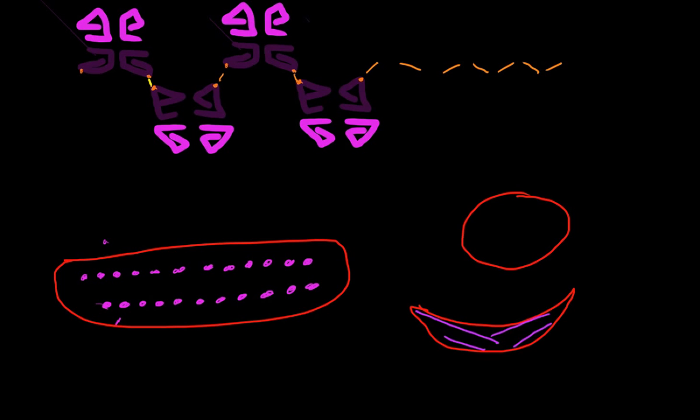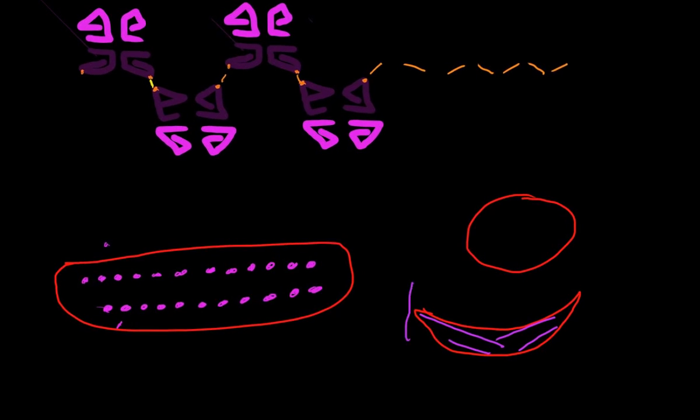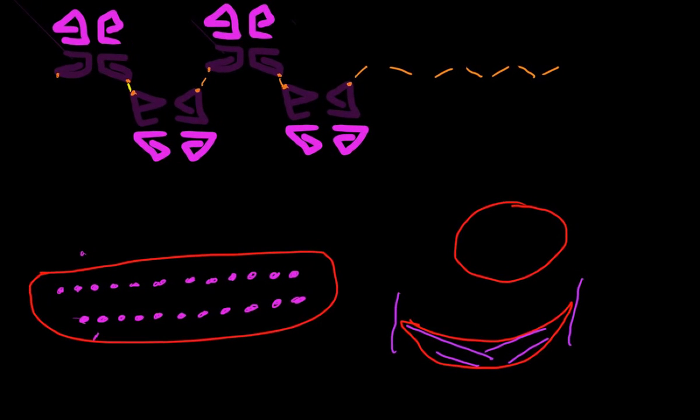Now we don't have nice round erythrocytes that can change shape and are pliable and can flow through narrow vessels. Now we have these long, rigid-shaped erythrocytes that tend to get stuck in vessels.